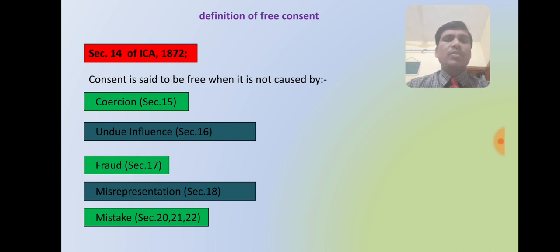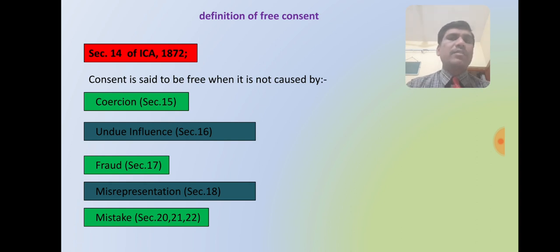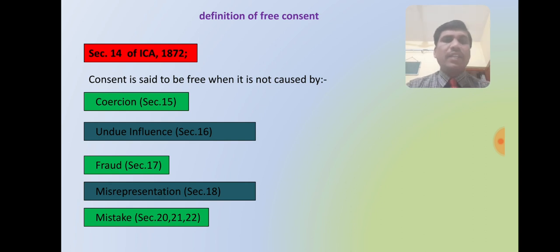According to the Indian Contract Act, 1872, free consent is necessary for a valid contract. If these five elements are present in any contract, then such a contract is voidable or void as per the provisions of Sections 15, 16, 17, 18, and 20, 21, 22. We will discuss each element one by one in detail.